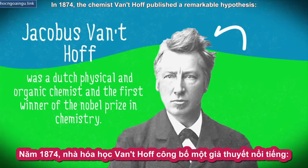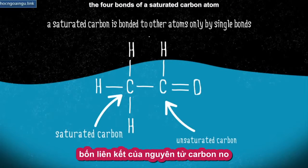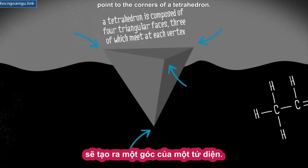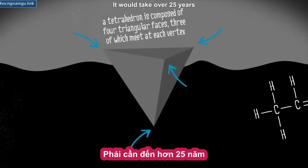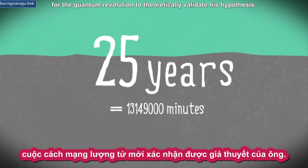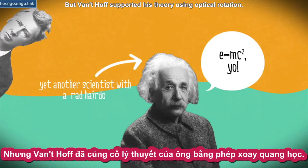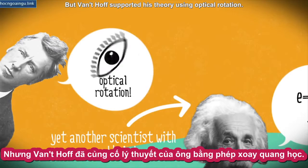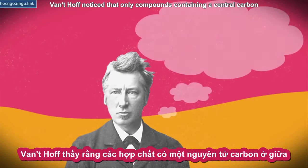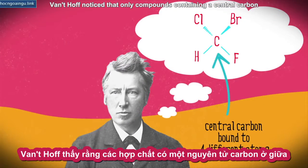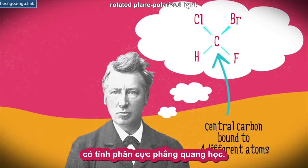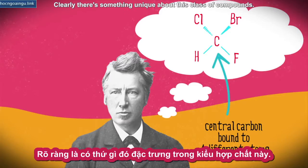In 1874, the chemist Van't Hoff published a remarkable hypothesis: the four bonds of a saturated carbon atom point to the corners of a tetrahedron. It would take over 25 years for the quantum revolution to theoretically validate his hypothesis, but Van't Hoff supported his theory using optical rotation. He noticed that only compounds containing a central carbon bound to four different atoms or groups rotated plane polarized light.